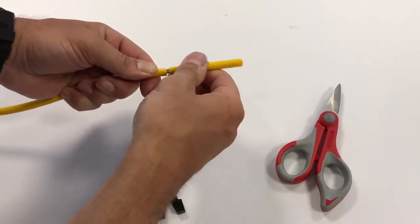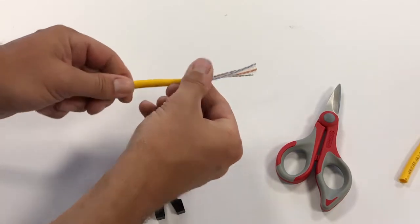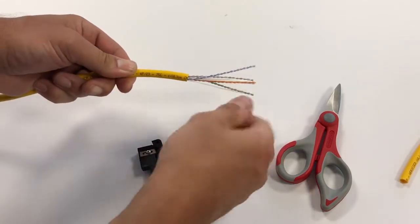We'll then bend and snap and remove the outer jacket. That's going to expose the inner core as well as the ripcord.